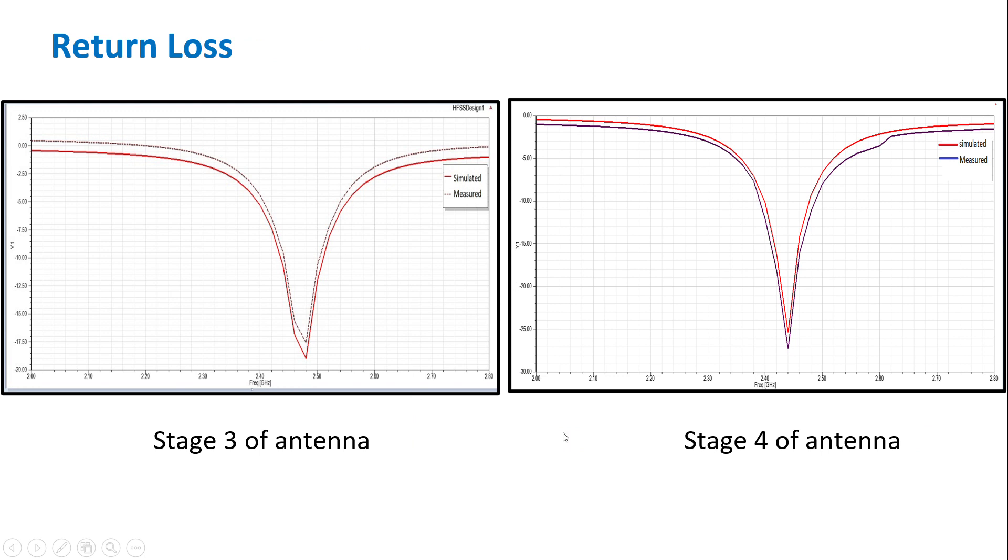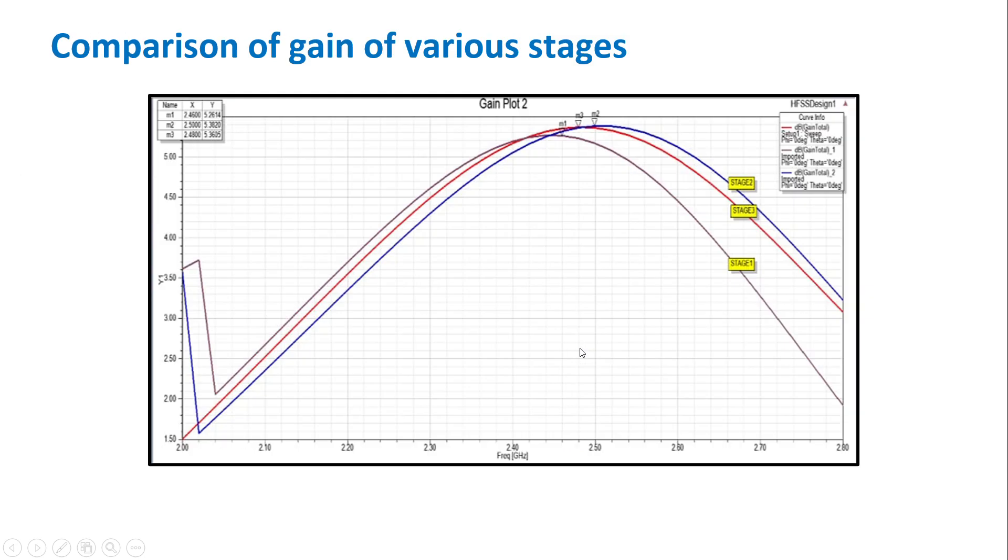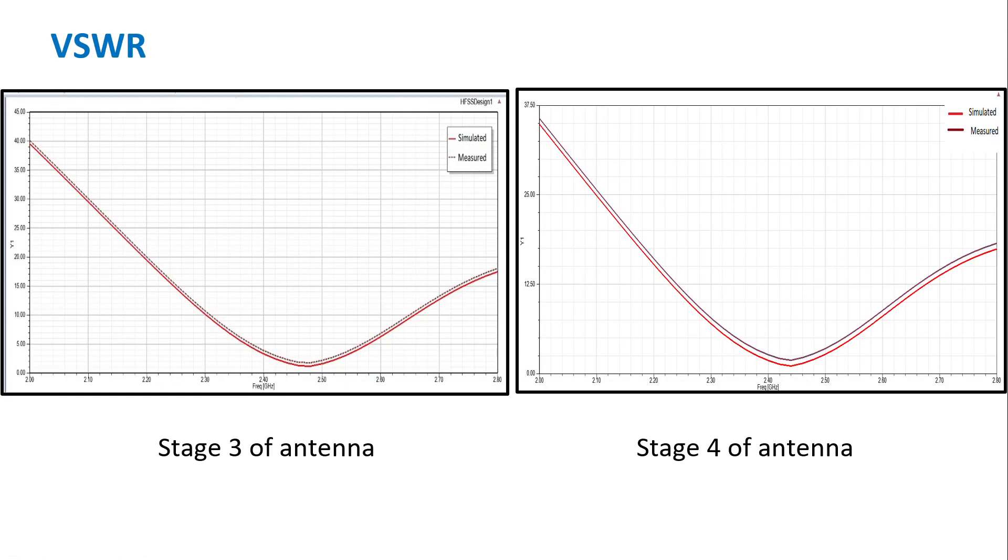When it comes to return loss, stage 4 of antenna has better return loss as its value is well below minus 25. It's just minus 17.5 here in stage 3 of antenna. And another reason is that stage 4 of antenna has its frequency very close to 2.45 gigahertz. Similarly, when it comes to VSWR, the stage 4 of antenna has better closeness to the 2.45 gigahertz frequency.